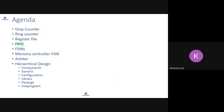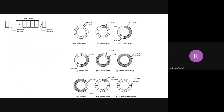Let us understand one more complex design which is FIFO. FIFO is a special kind of buffer design which is basically first in, first out. Data is written inside the FIFO, and whichever data was written first comes out of the FIFO first. This is one linear way of looking at FIFO.